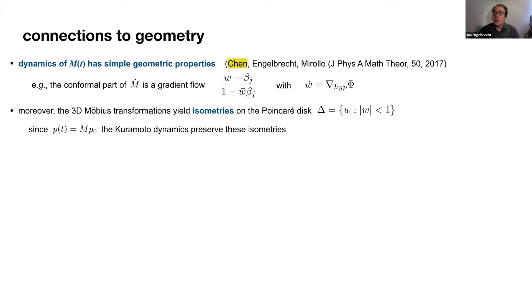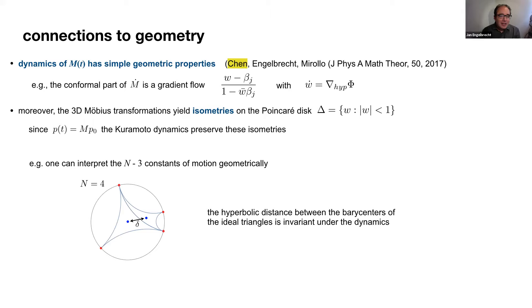We can use that to rediscover a well-known result. Here's an example of finite n, n equal to four oscillators. We know from Watanabe and Strogatz there's one constant of motion, and I can construct a constant of motion geometrically. If I look at the four oscillators that live on the circle on which there is no apparent geometry, I can draw two ideal triangles. Each of those triangles will have a barycenter, a center of mass inside the disk. So I now have two points inside the disk. They will move under the dynamics, but the hyperbolic distance between them is a constant of motion.